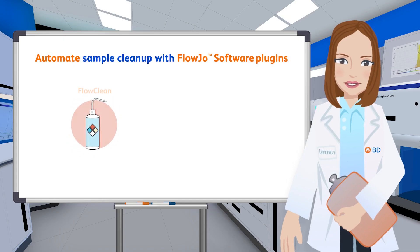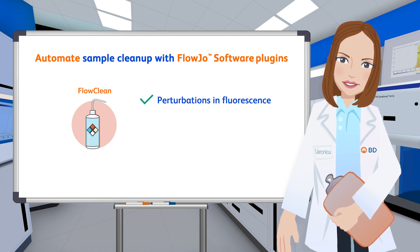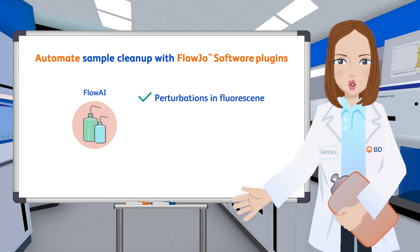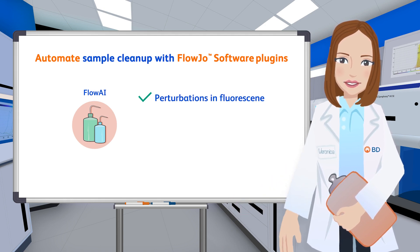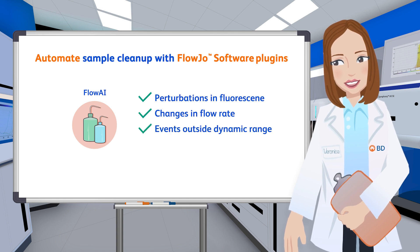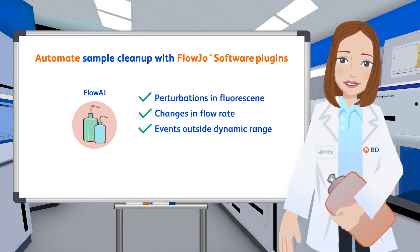The FlowClean plugin splits data into equally sized time bins and identifies periods where subpopulations are abnormally represented relative to the rest of the dataset. The FlowAI plugin detects fluorescent perturbations across parameters, like FlowClean, but also checks for changes in flow rate and fluorescent events outside the dynamic range of the instrument. The FlowAI plugin also creates a report to describe the source of excluded events.